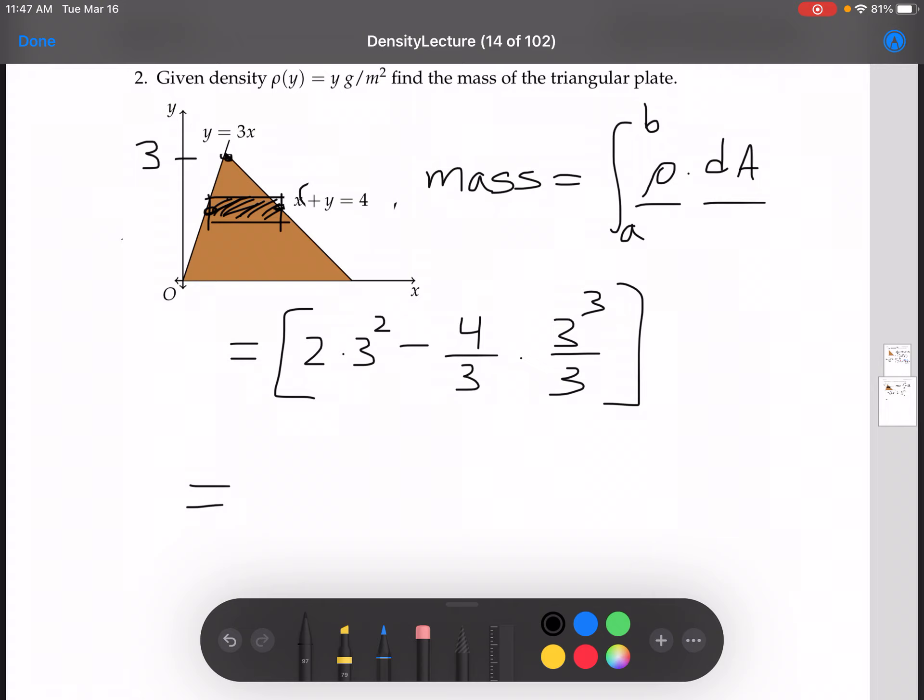So then we have 2 times 3 squared minus 4 over 3 times 3 cubed over 3. You could cancel one of these with one of those, then you have 2 left. And cancel one of those with one of those, you'd have 1 left. So here we have 9. 9 times 2 is 18. 18 minus 12 is 6. And so our answer is 6 grams.